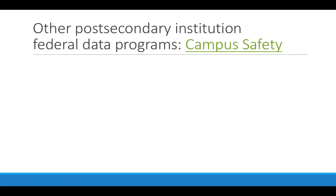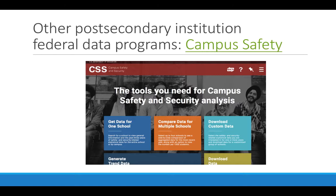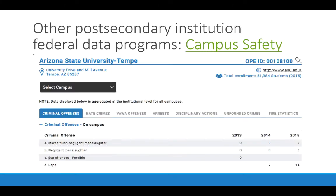However, there are two other more niche federal data programs that all institutions receiving federal funding are also obligated to participate in. The first is called the Campus Safety and Security Database, which came about through the Clery Act. Basically, the campus safety data tool allows researchers and the general public to download and view information about criminal offenses that have occurred on college and university campuses over the past several years. It's useful if you're doing research particularly on crime on campus and disciplinary actions on campus.